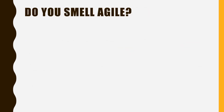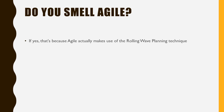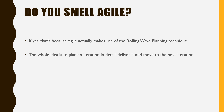Do you smell agile in this entire concept? If yes, that's because agile actually makes use of the rolling wave planning technique. In traditional project management we do use agile to a certain extent. The whole idea is to plan an iteration in detail, deliver it, and move to the next iteration — that's the idea of agile. Here you're planning in detail, completing the work package, and then moving on, eventually delivering the entire project as a whole. That's traditional project management. Do you also see shades of prototyping here? Let us know in the comments.